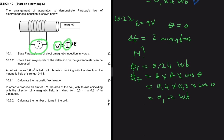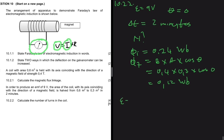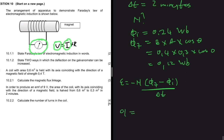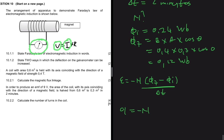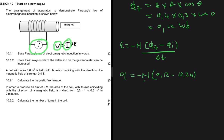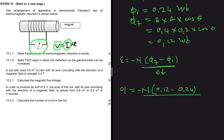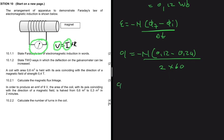Now substitute into the equation: EMF = −N × (flux linkage final − flux linkage initial) / delta t. We have EMF = 9, N is what we're looking for, flux final = 0.12, flux initial = 0.24, and delta t = 2 minutes = 2 × 60 seconds. Cross-multiplying gives: 9 × 2 × 60 = −N × (0.12 − 0.24).